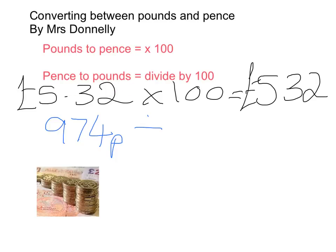I need to think, how many hundreds are there in 974? Well, there's 9 whole ones, so it's going to be 9.74, so £9.74.